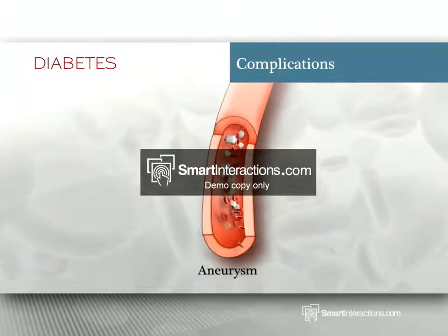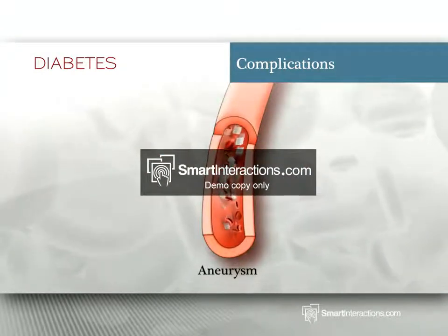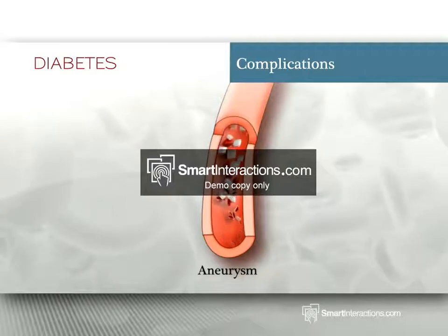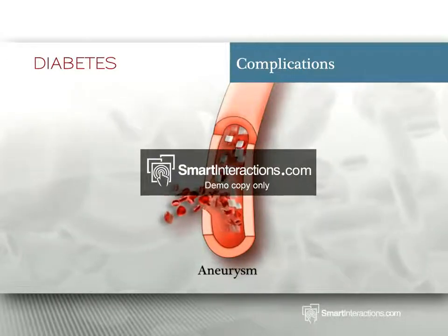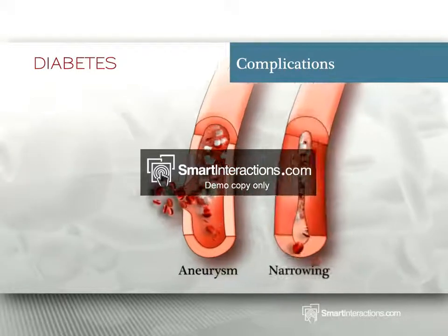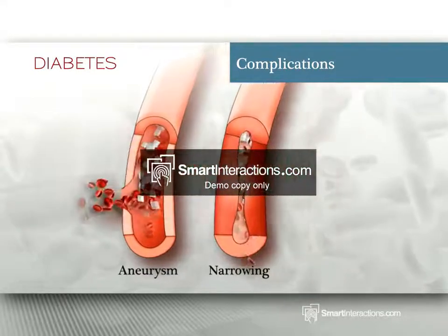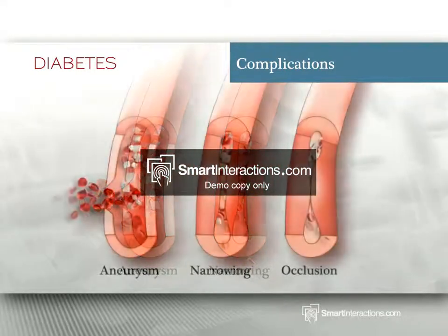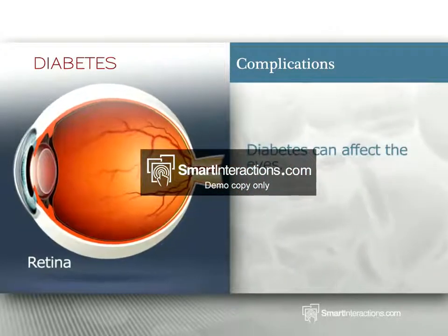Over long periods, high levels of blood glucose can create an inflammation of the vascular system. Inflamed blood vessels can only react in a limited way — they can rupture and create internal bleeding, or they can narrow and partially or totally block blood flow.